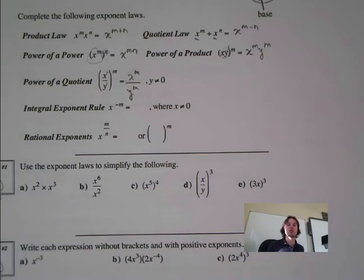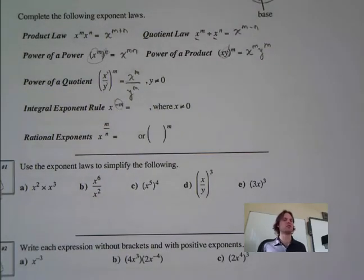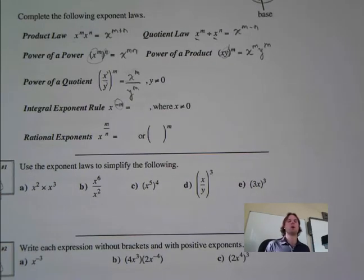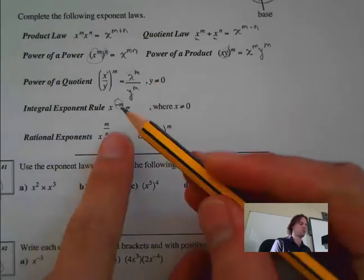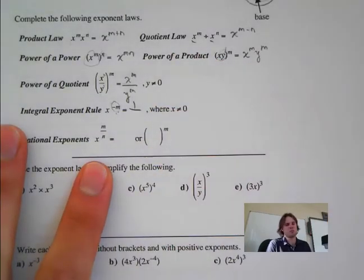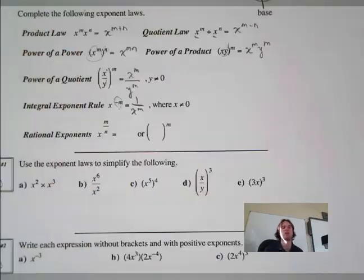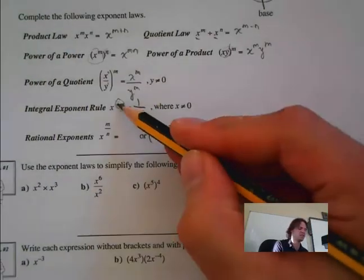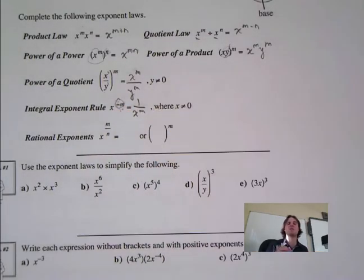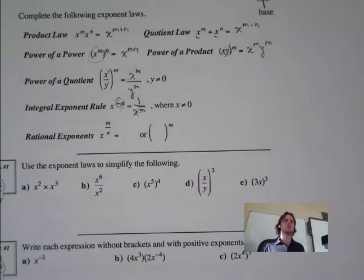Next is the integral rule — when we have a negative exponent. A lot of times on tests, they'll give you a question and say express with positive exponents. Therefore we must use the integral rule. We just take the reciprocal. The x doesn't become negative — it stays positive. The only thing we're getting rid of is the negative exponent, so we flip it.